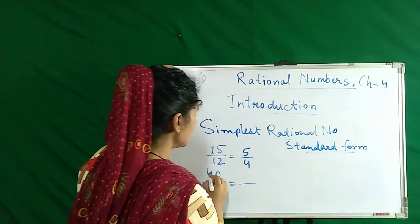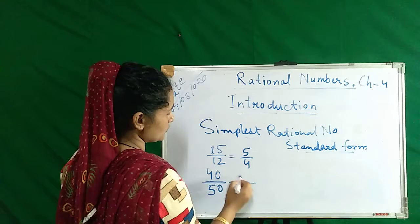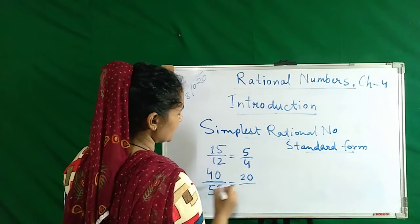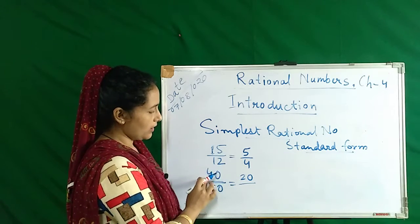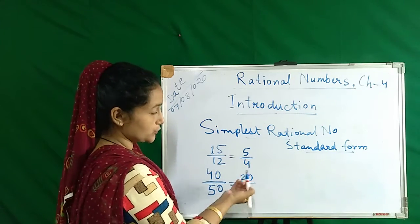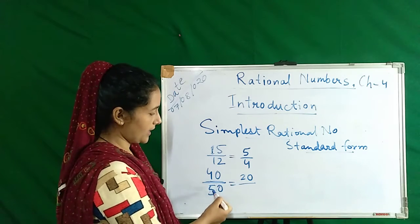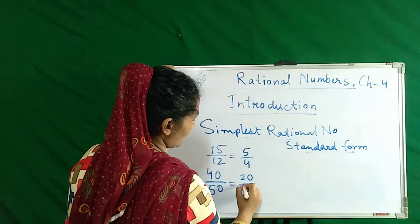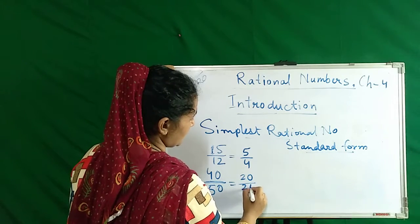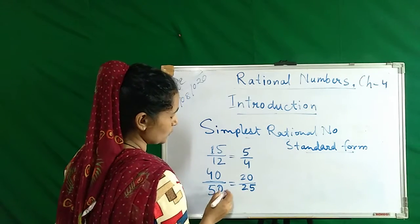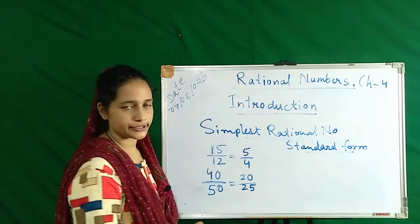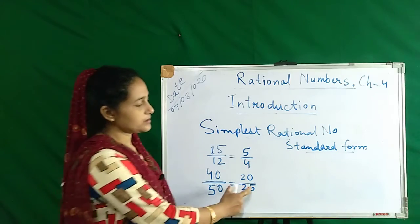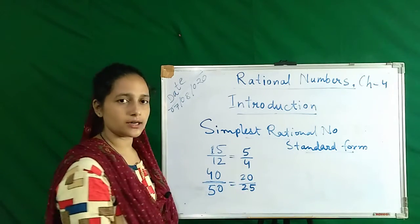If we cut both numbers — 20 goes into 40 and 20 goes into 50 — we get 2 over 2.5, or we simplify to 4 over 5. But this number is not yet in standard form, so it will be cut again.